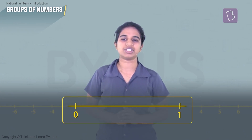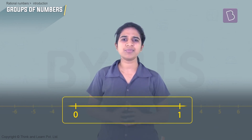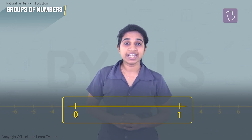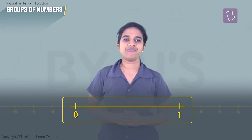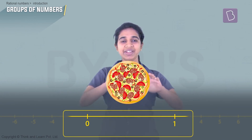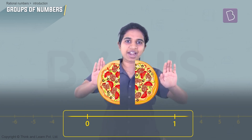Do we now have all the numbers possible? It seems like a lot, but not really. Let's zoom into a section of the number line — say, zero to one. This is one unit. Can we have more numbers here? Can we divide it into smaller units? If we can, then we would have numbers in between. Let's imagine it to be a pizza instead — can we divide this unit?